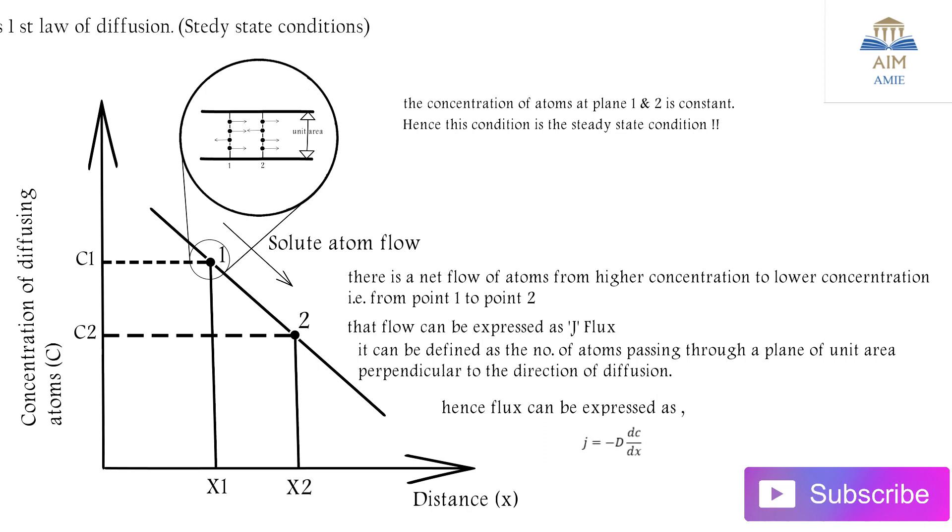J equals minus D into dC by dX. D is the diffusivity in this case, which is measured in centimeter square per second, and dC by dX is the concentration gradient.